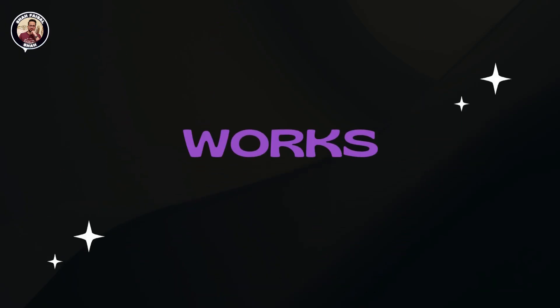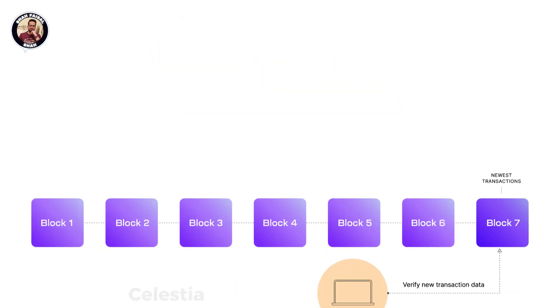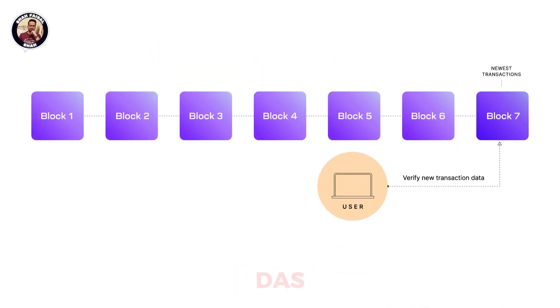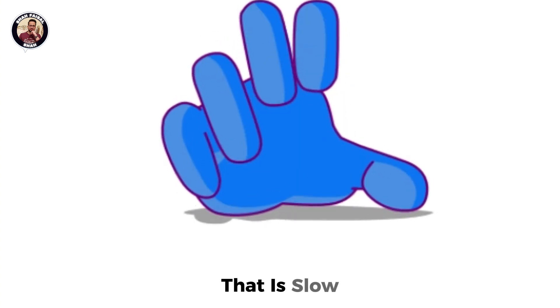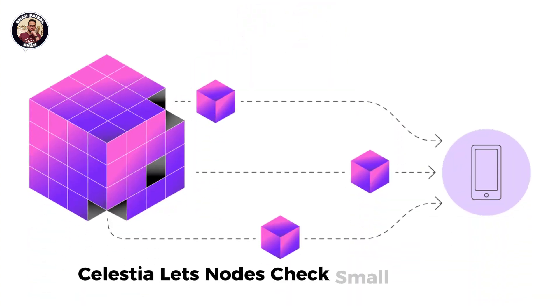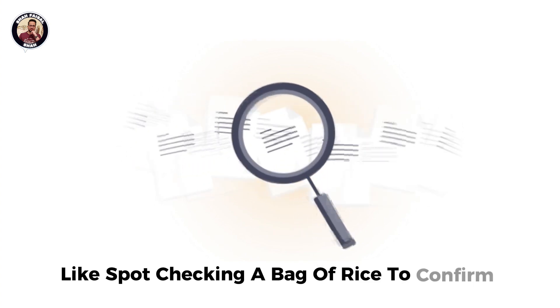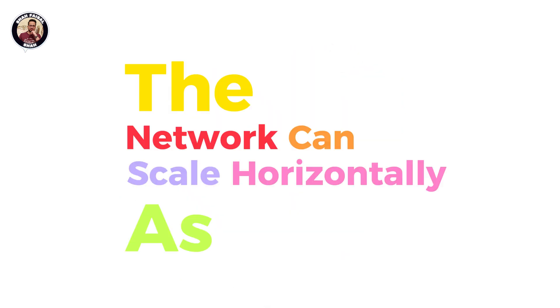Let's talk about the technology, but in simple words. Celestia uses something called Data Availability Sampling, or DAS. Normally, blockchain nodes need to download everything in a block to verify it — that is slow. Celestia lets nodes check small, random parts of a block, like spot-checking a bag of rice, to confirm the whole thing is valid. This means validators do not need to store full blocks, and the network can scale horizontally as more people join.